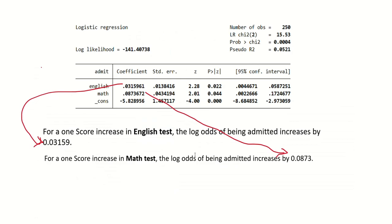Then we have the values for the coefficients. The value for coefficient for English score is 0.03159. We will explain this as: for a one-score increase in English test, the log odds of being admitted increases by 0.03159. Similarly, we will explain the coefficient for Math in the similar manner.